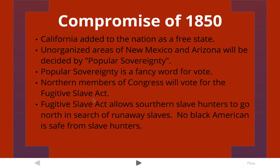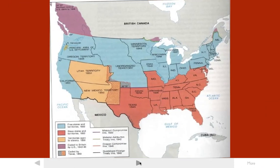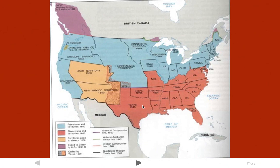The Fugitive Slave Act would allow Southern slave hunters to go north in search of runaway slaves, meaning no Black American would be safe from slave hunters. Looking at the map of the country in 1850, the Compromise of 1850 adds California as a free state, and to make Southerners happy, opens up the Utah and New Mexico territories to possible slavery if those territories vote for it — that's popular sovereignty. In addition, the South gets the Fugitive Slave Act, allowing them to hunt runaway slaves even if they had made it into the North.